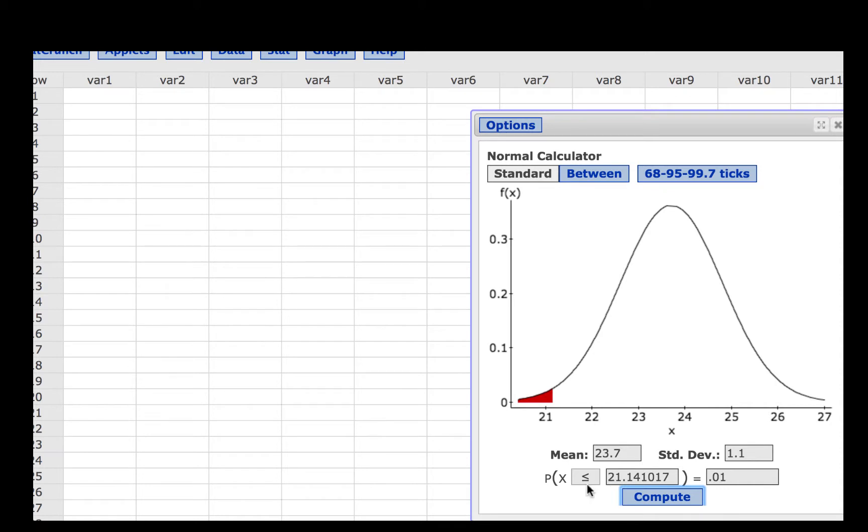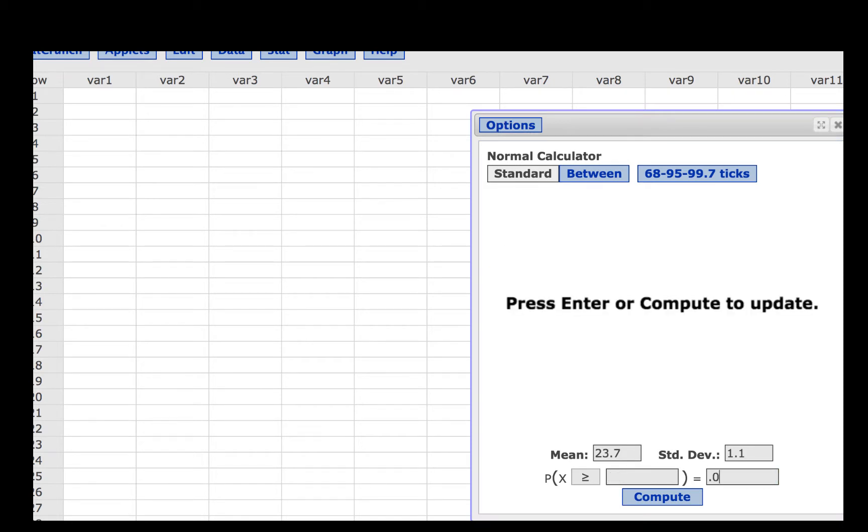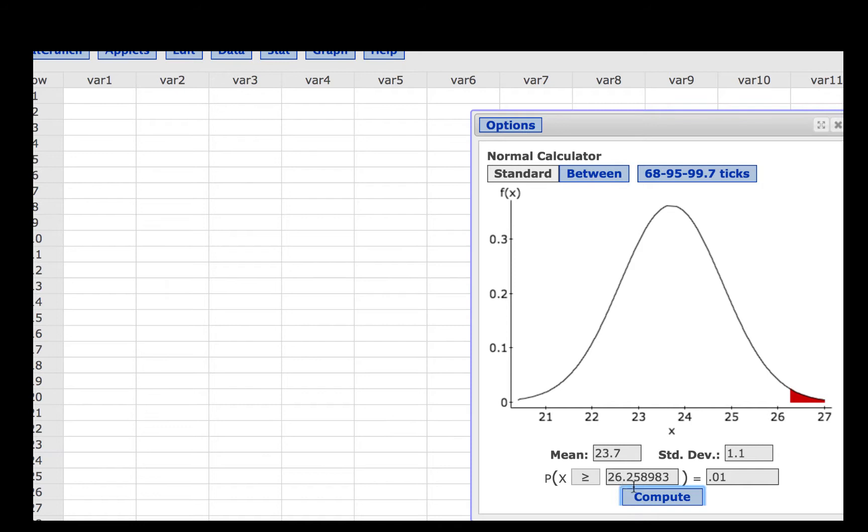Now to find the cutoff point to the right, we will make this say greater than and we will change this back to 0.01. Now click compute and we find that that cutoff point is 26.3 if we round to one decimal place.